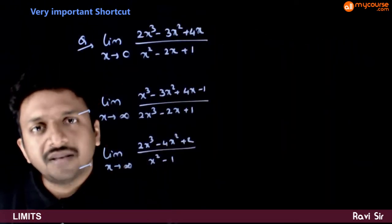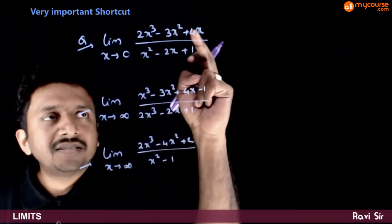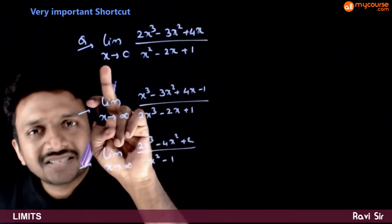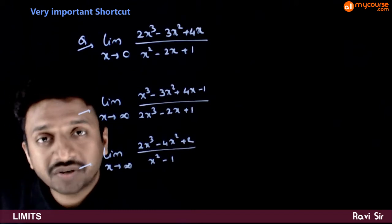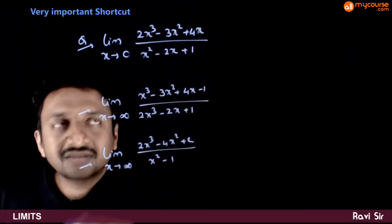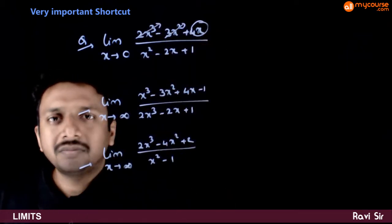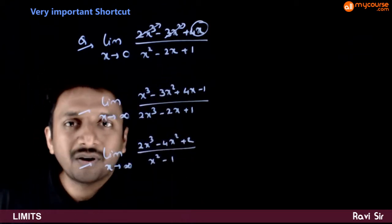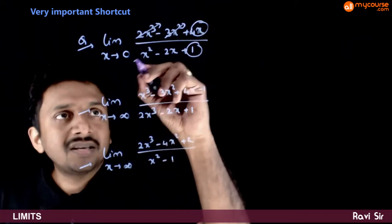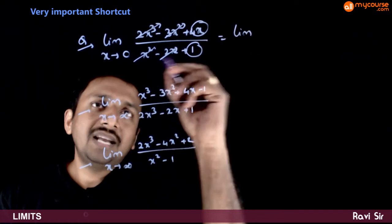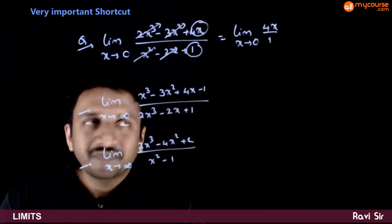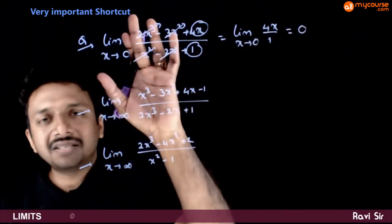For example, find the limit as x tends to 0 of (2x³ − 3x² + 4x) / (x² − 2x + 1). Using our statement, when x tends to 0, only the least power matters. In the numerator, the least power of x is x (the 4x term), so we neglect the other terms. In the denominator, the least power is x⁰ = 1, so we neglect the other terms. This limit is the same as limit x→0 of 4x/1, and as x→0, 4x→0, so the answer is 0.